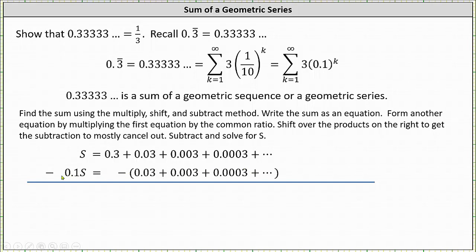And now we subtract the second equation from the first equation. On the left, s minus 0.1s is 0.9s. On the right, notice all the terms will simplify out except the first term in the first equation, which is 0.3. All the other terms do simplify out. 0.03 minus itself is 0, 0.003 minus itself is 0, and so on.